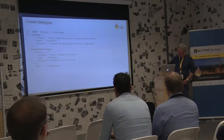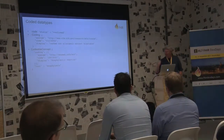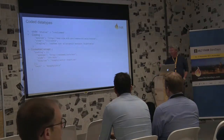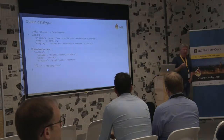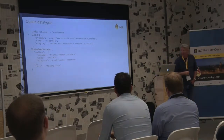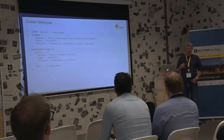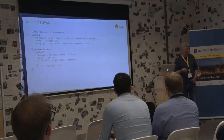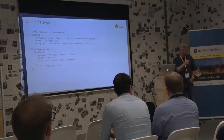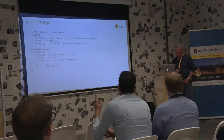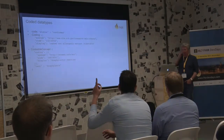The 'half' coded data type is the quantity data type, which has a unit in it, and that unit in turn comes from a system — so that's the half.